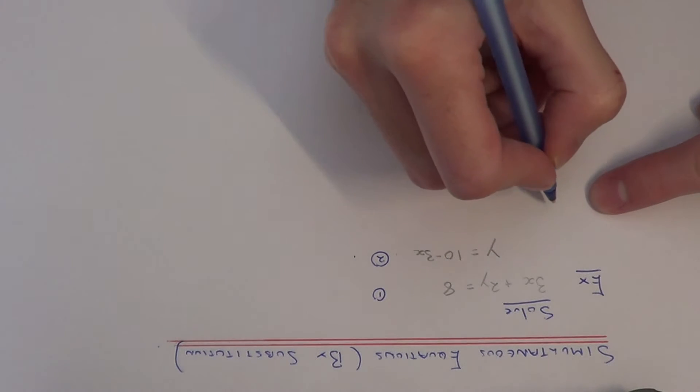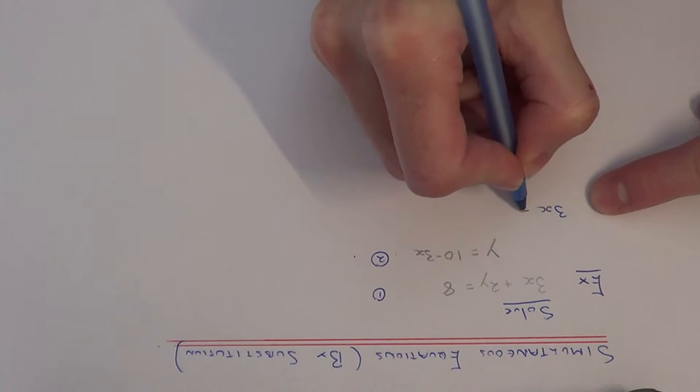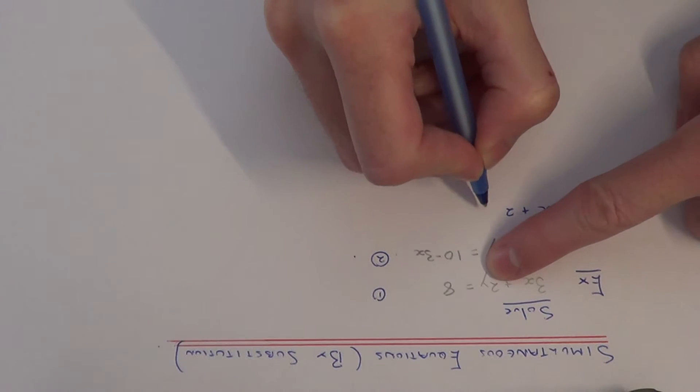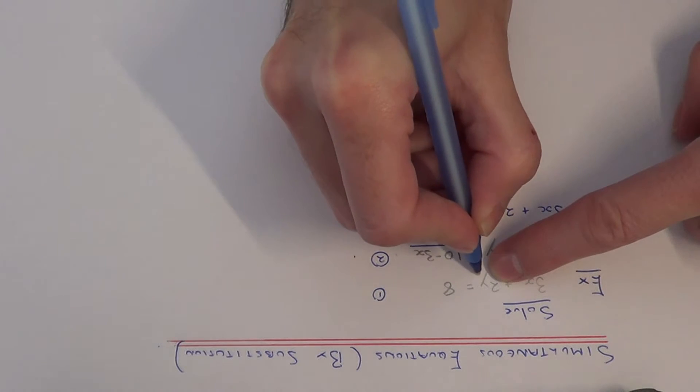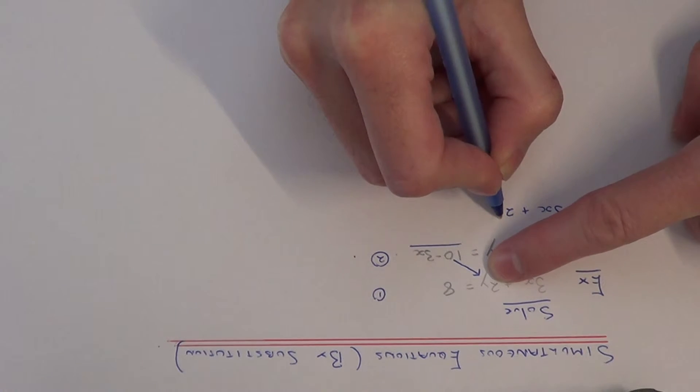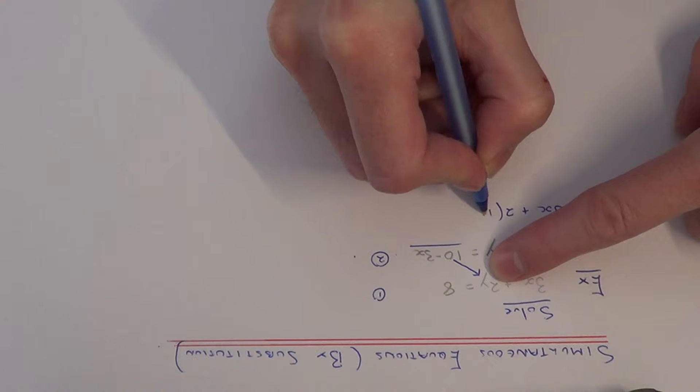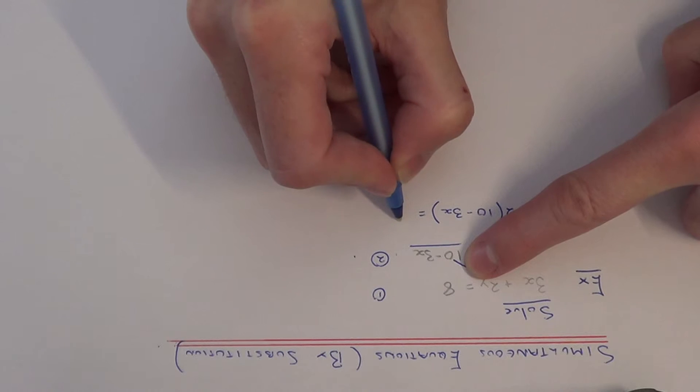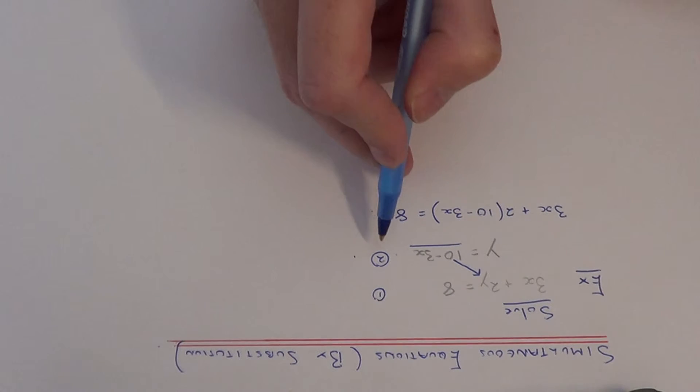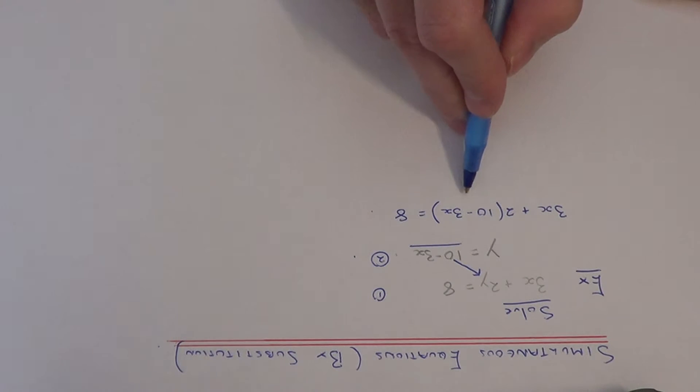So let me do this then. So we've got 3x plus 2. So we're going to change the y to 10 minus 3x. So this will need to go in a bracket. And that's equal to 8. So what I've done then is substituted 10 minus 3x in for the y.